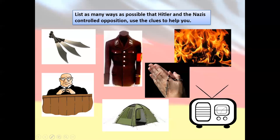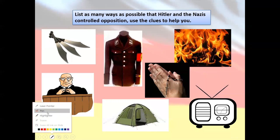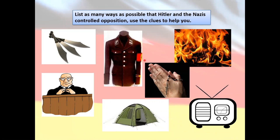The starter activity is about reflecting on the last few lessons. List as many possible ways that Hitler and the Nazis controlled opposition. Use the clues provided to help you — pause the video for five minutes, then come back when you're ready.